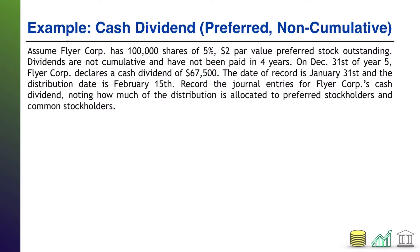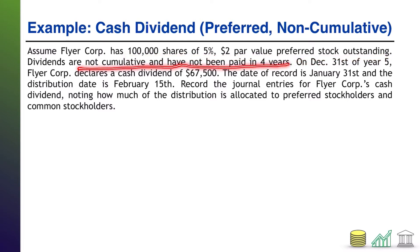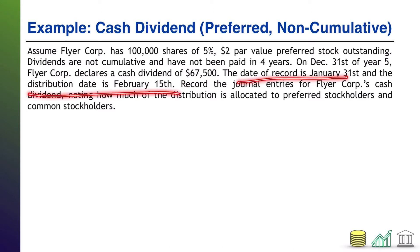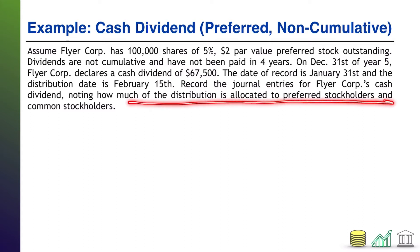Cash dividends specifically for preferred non-cumulative stock. Assume FlyerCore has 100,000 shares of 5%, $2 par value preferred stock outstanding. Dividends are not cumulative and have not been paid in four years. On December 31st of year five, FlyerCore declares a cash dividend of $67,500. We are given the date of record, then the distribution date. Record the journal entries for the cash dividend, and note how much of the distribution winds up with preferred stockholders versus common stockholders.